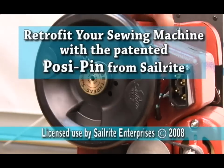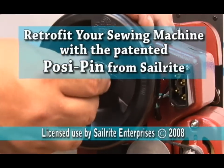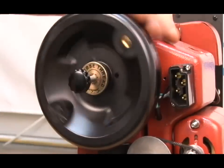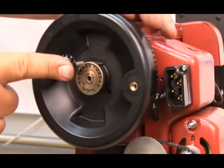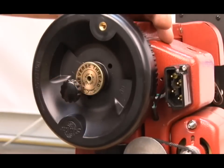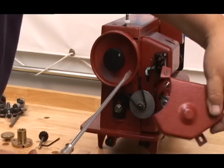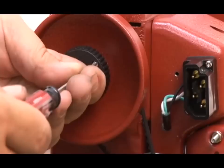This video shows how to install Sailrite's patented solution to a direct drive system called the PosiPen. The PosiPen is an excellent replacement for a compression clutch mechanism. To install the PosiPen components, remove the belt cover if there is one.